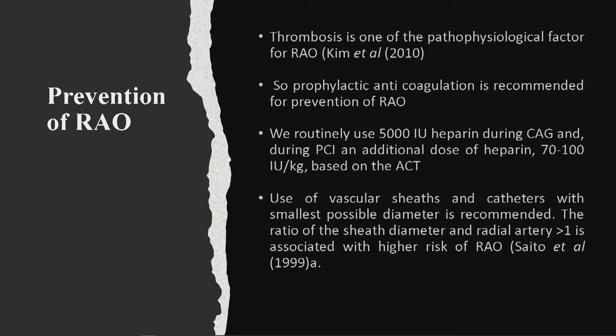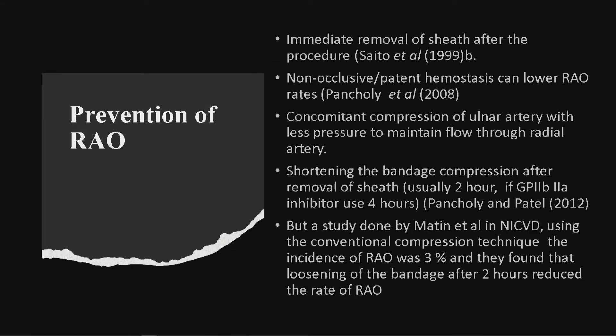Prevention of radial artery occlusion: thrombosis is one of the mechanisms, so prophylactic anticoagulation is recommended. We routinely use 5,000 units of heparin for CAG, and 70 to 100 units per kg for PCI. Use the vascular sheath and catheter with the smallest possible diameter. If the sheath-to-artery diameter ratio is more than one, there is an increased chance of occlusion. Immediate removal of sheath after procedure is advised. Non-occlusive or patent hemostasis can lower radial artery occlusion as mentioned by Pancholi et al. and Patel et al. Concomitant compression of the ulnar artery may also reduce radial artery occlusion.